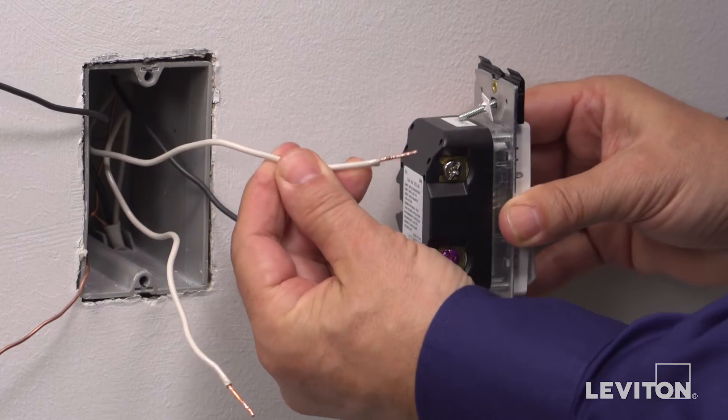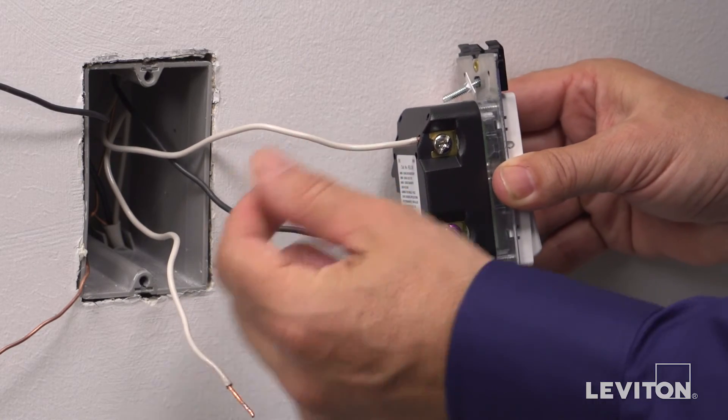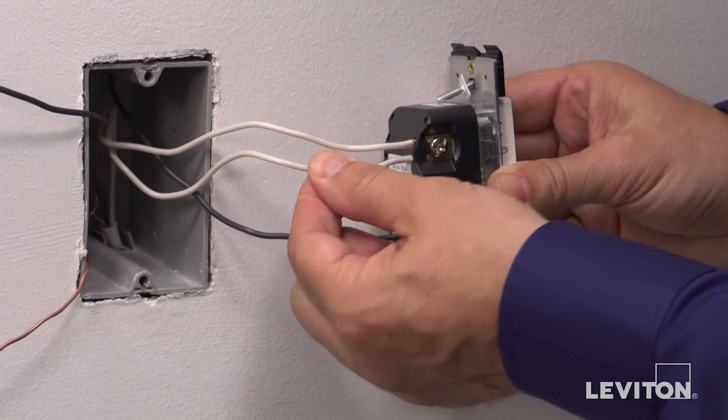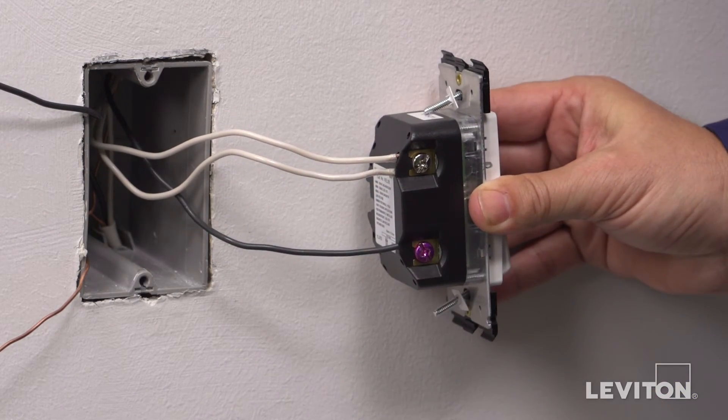Next, take the neutral wire or wires and insert them into the holes labeled WH. Tighten the screw to secure.